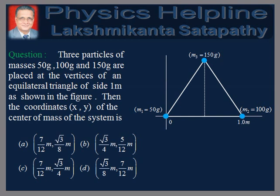Three particles of masses 50 grams, 100 grams and 150 grams are placed at the vertices of an equilateral triangle of side 1 meter as shown in the figure. Then, the coordinates (x, y) of the center of mass of the system is: